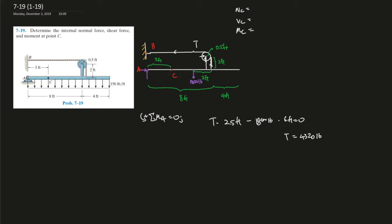And now we can use this entire system using the sum of the forces in the x direction, going this is positive. So Ax minus T equals to 0, Ax equals to T, so Ax should be 4,320 pounds as well.